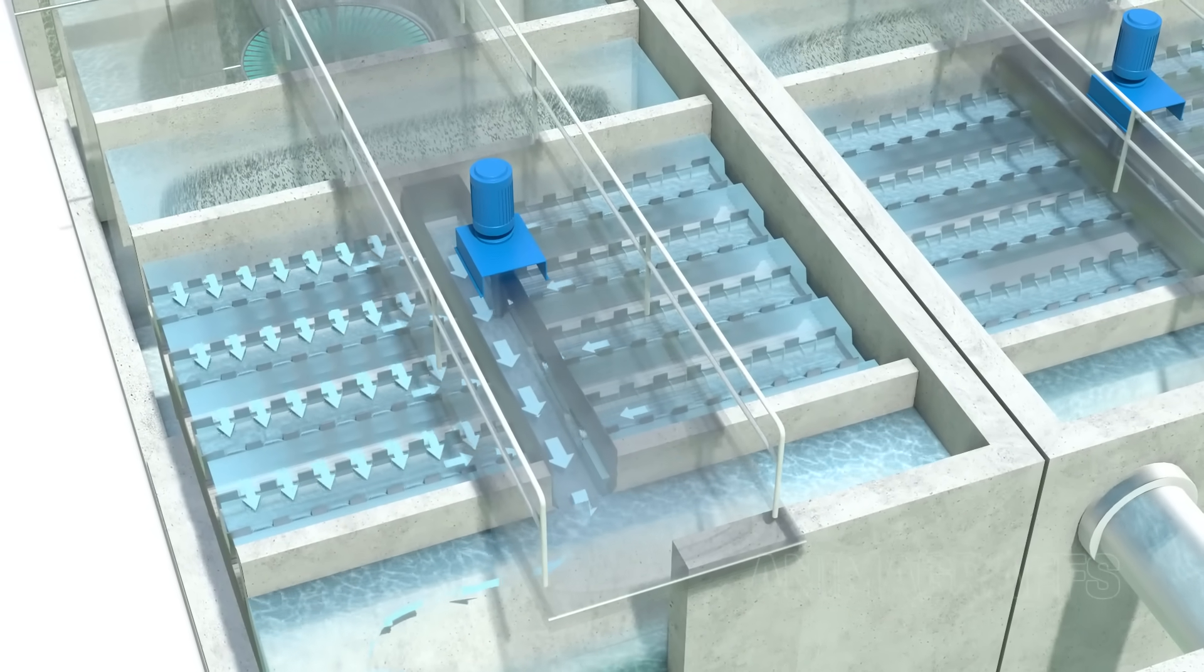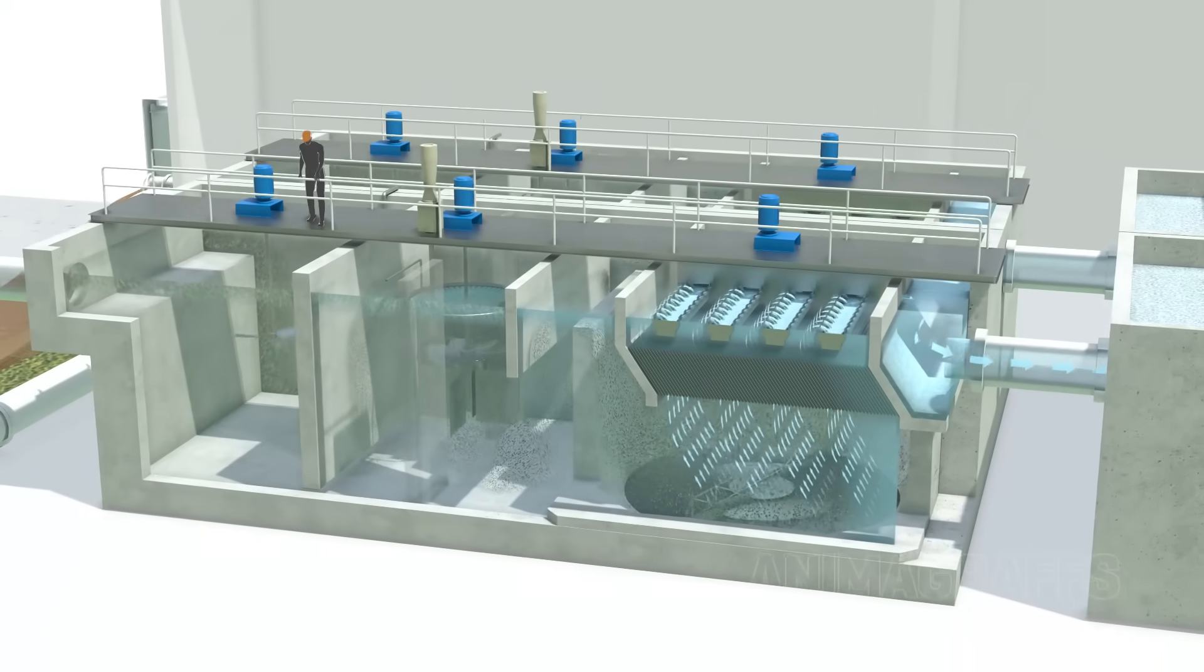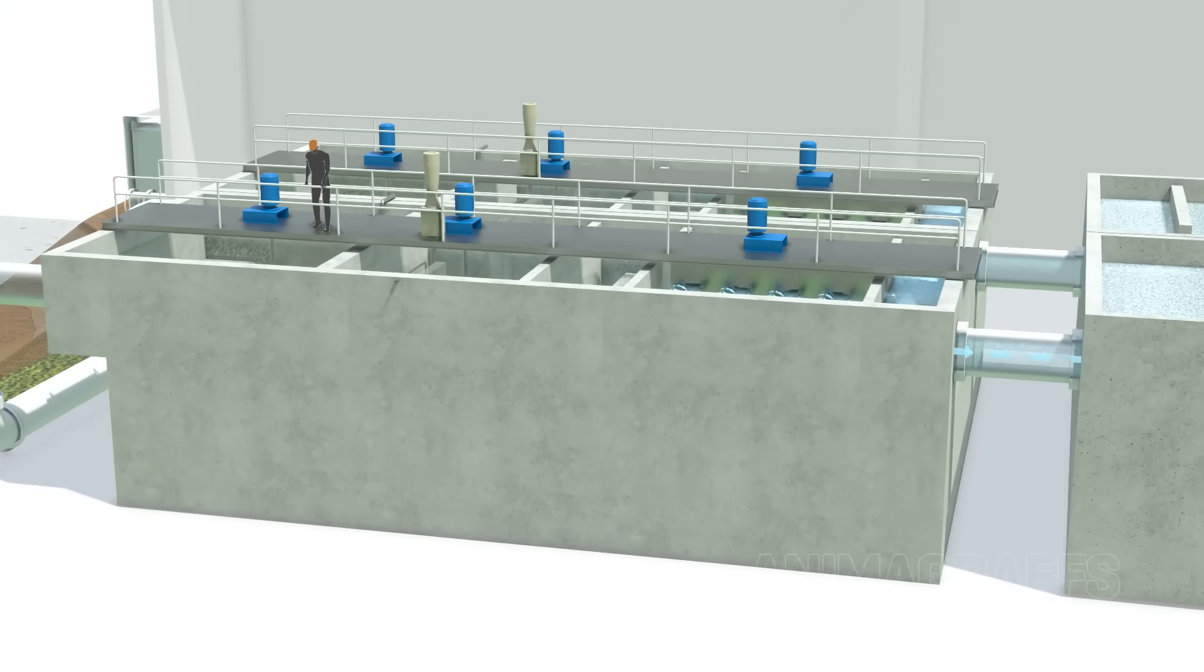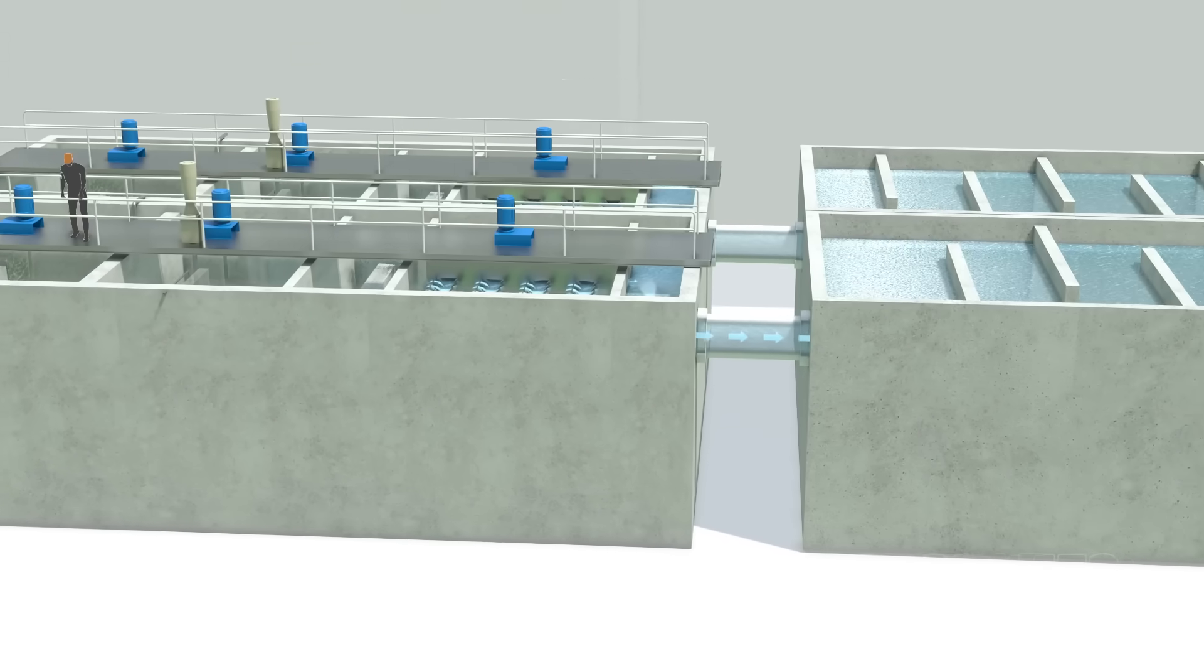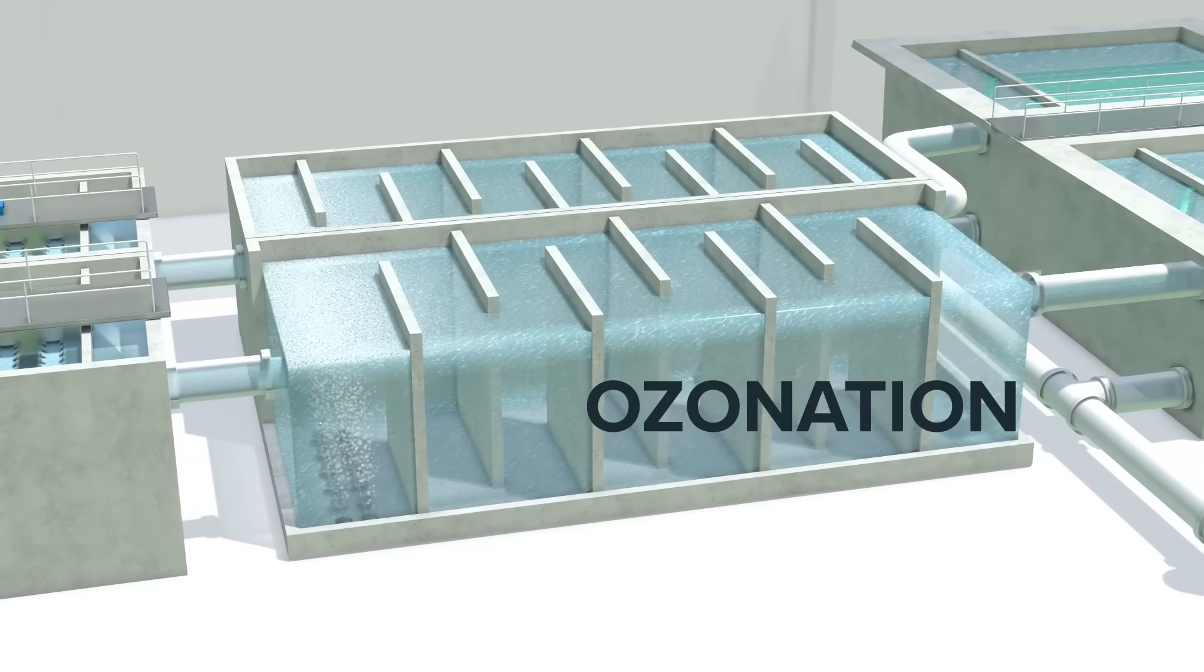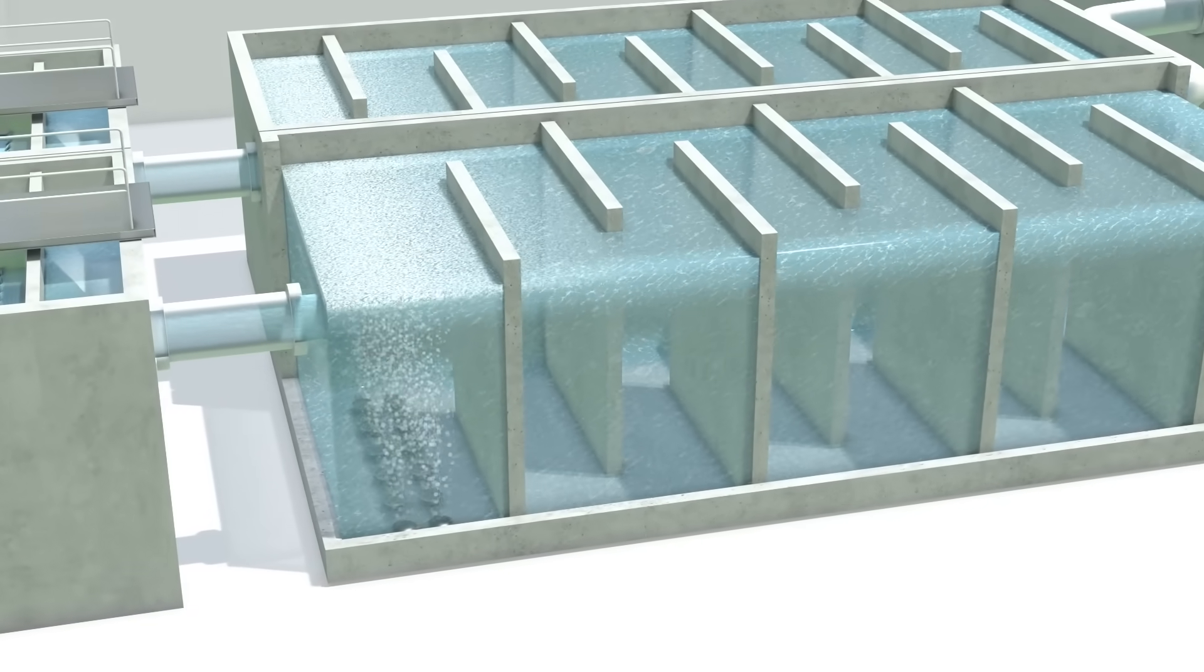At this stage, the water already looks clear and a lot less cloudy. Now it's on to ozonation and filtration to treat microscopic taste and odor-causing agents. These can include inorganic elements such as iron or sulfur, or harmful bacteria and viruses.